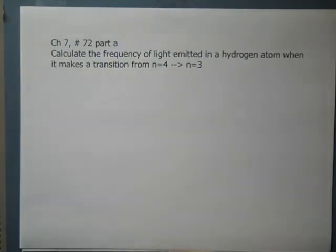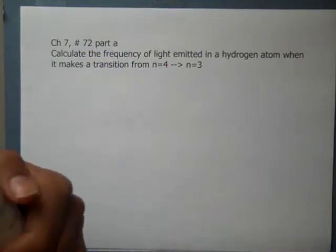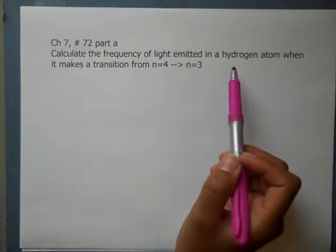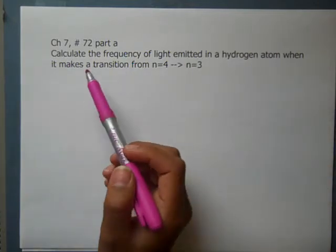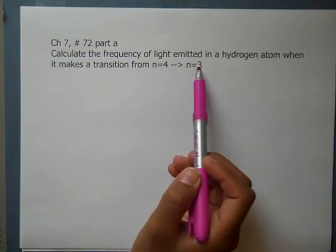For chapter 7, problem 72 part a, we need to find the frequency of light that is emitted in a hydrogen atom when it makes a transition from n=4 to n=3.